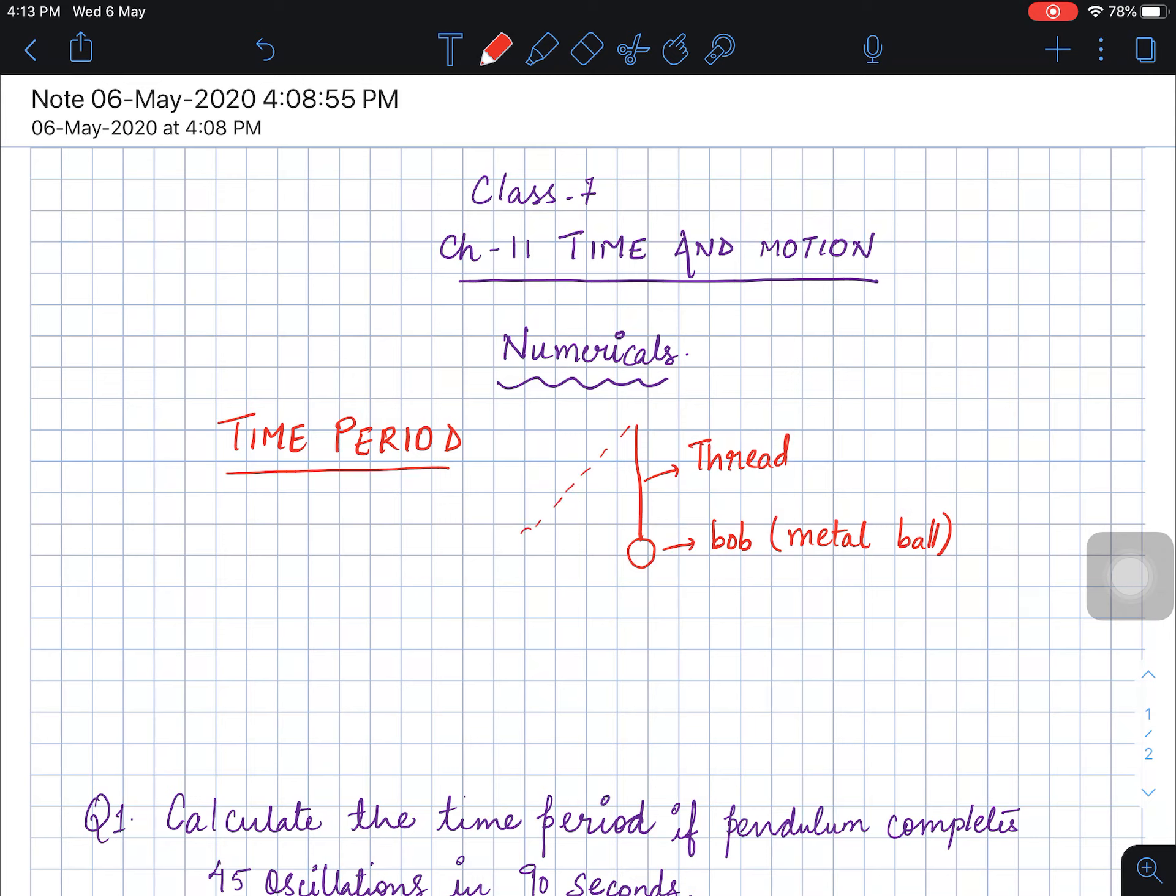Now I have already explained in the previous video that this is the mean position when it is not moving. When the simple pendulum moves, it goes to extreme position, and again on the other side there is another extreme position.